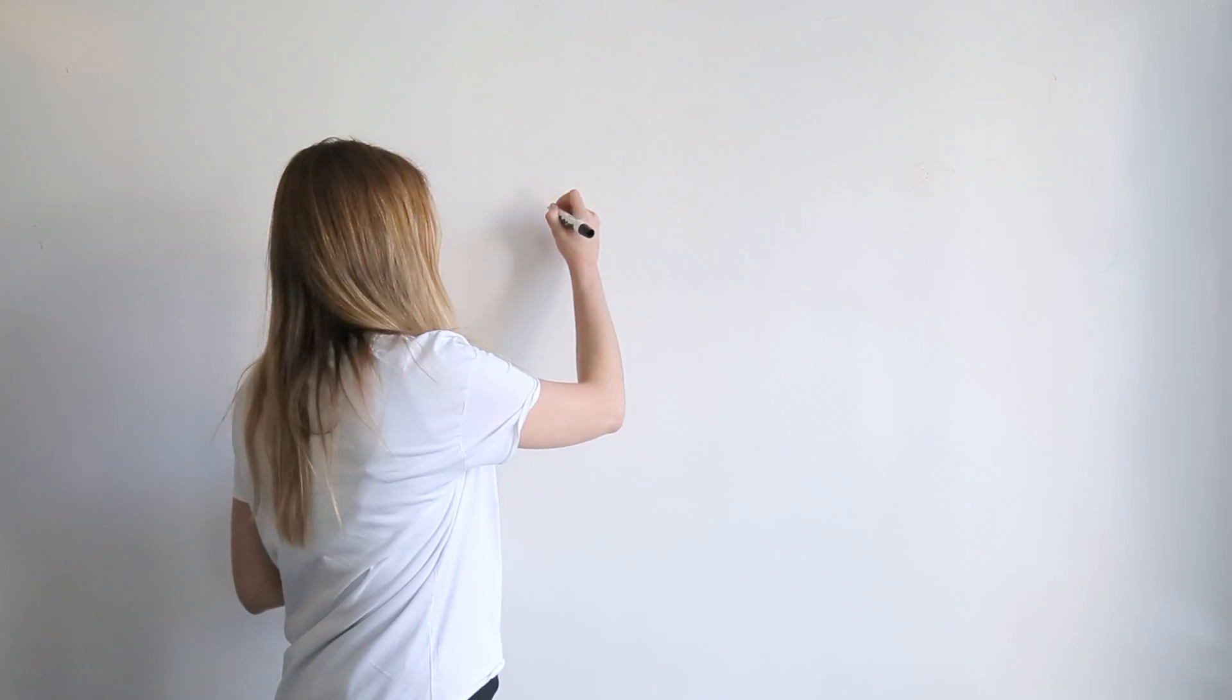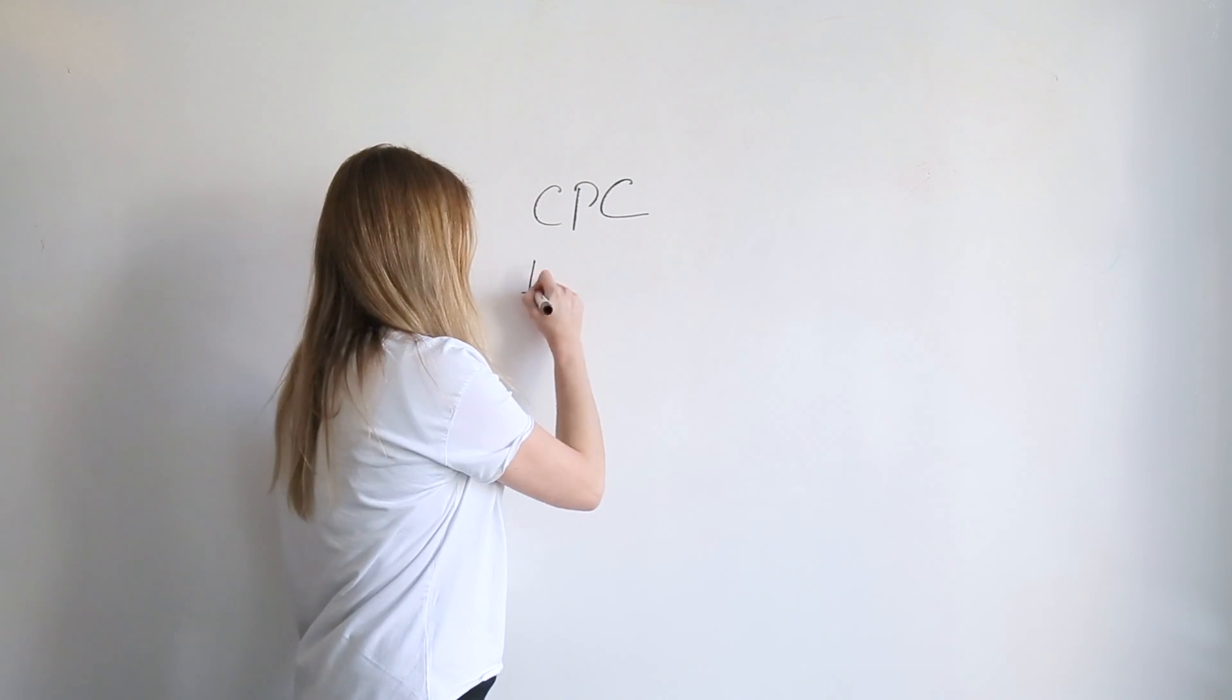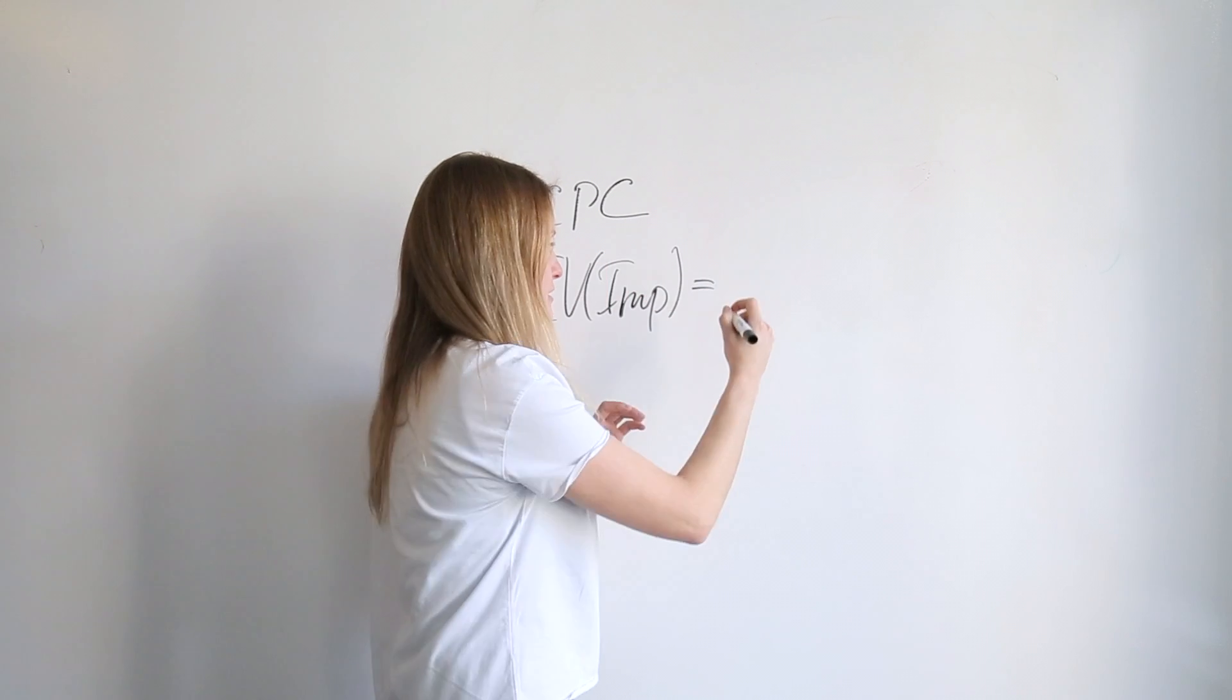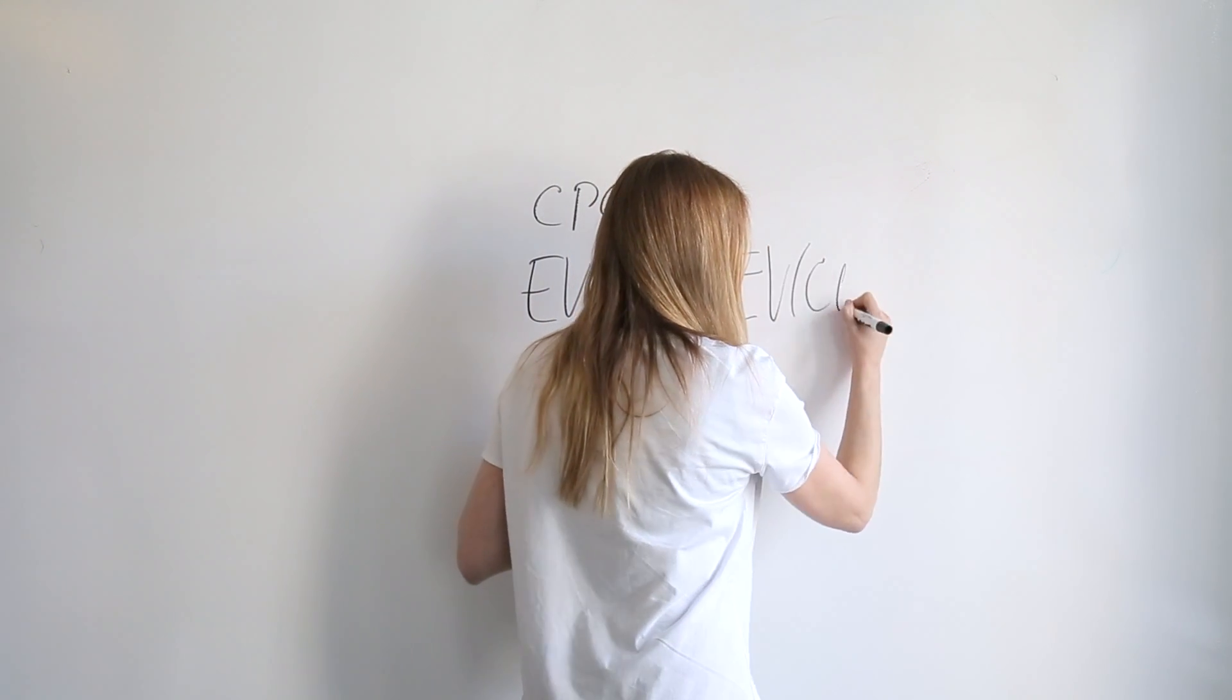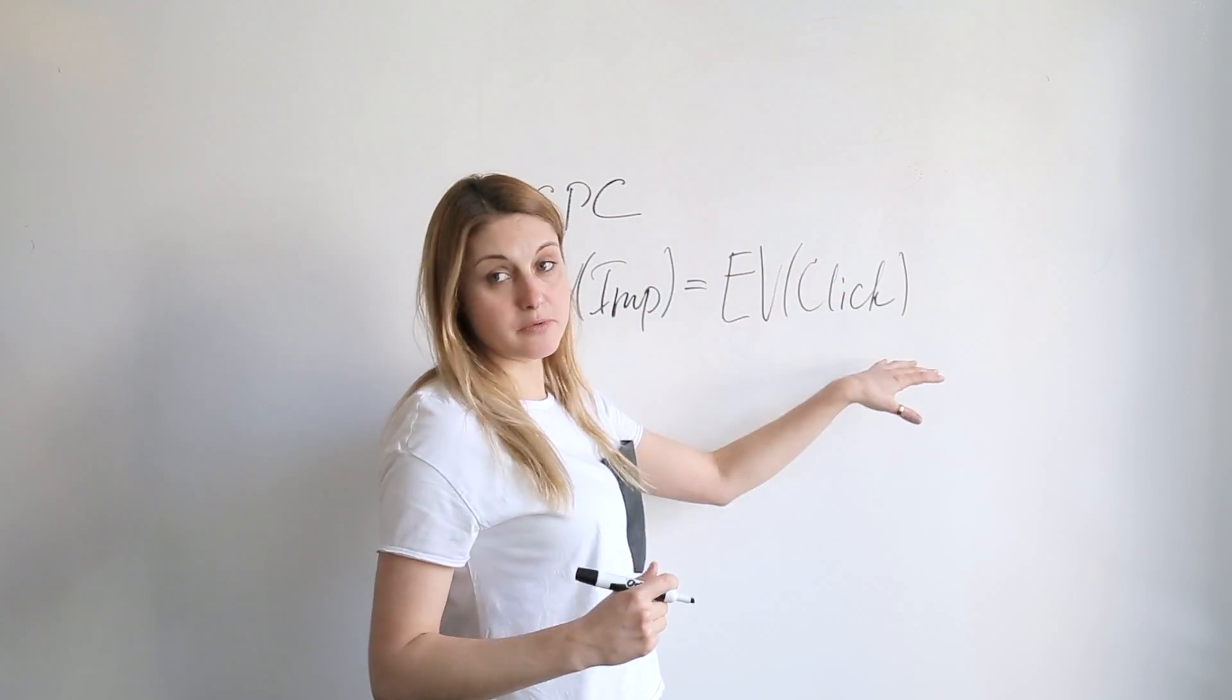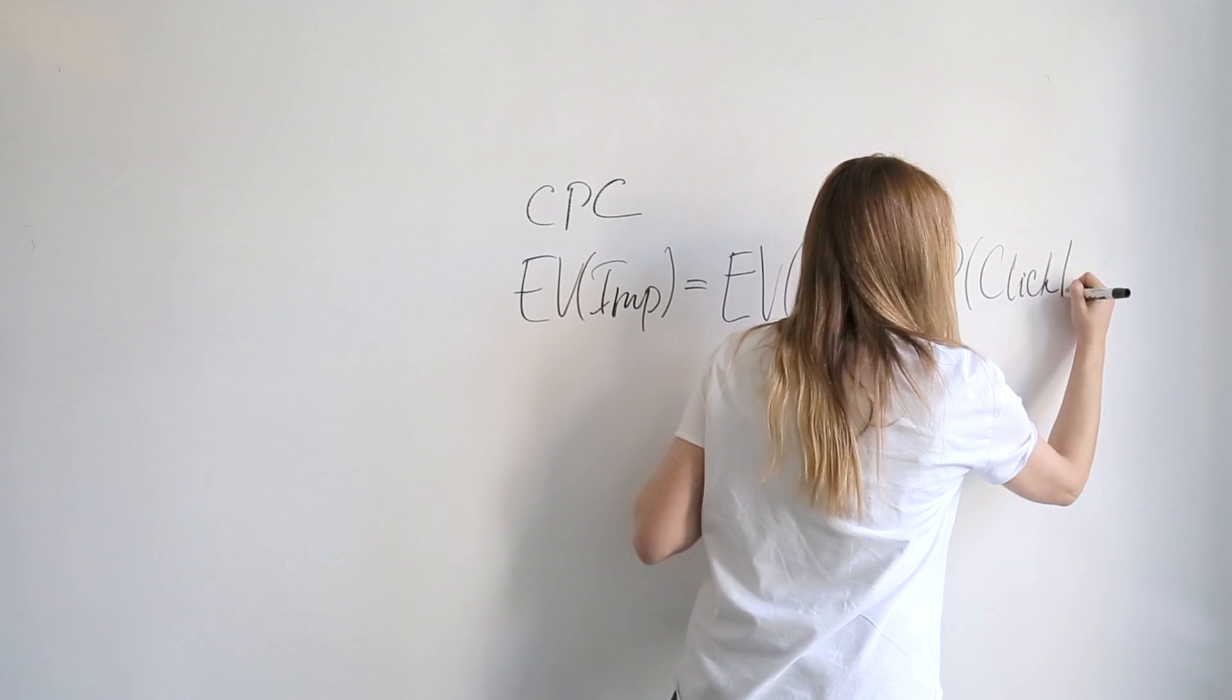We want to optimize your CPC goal. When you optimize CPC, you have an expected value of your impression, and you break it down into two parts. One part is the expected value of a click, which you can define yourself as a client or use a custom model to define. Then you need to know the probability of a click given an impression.